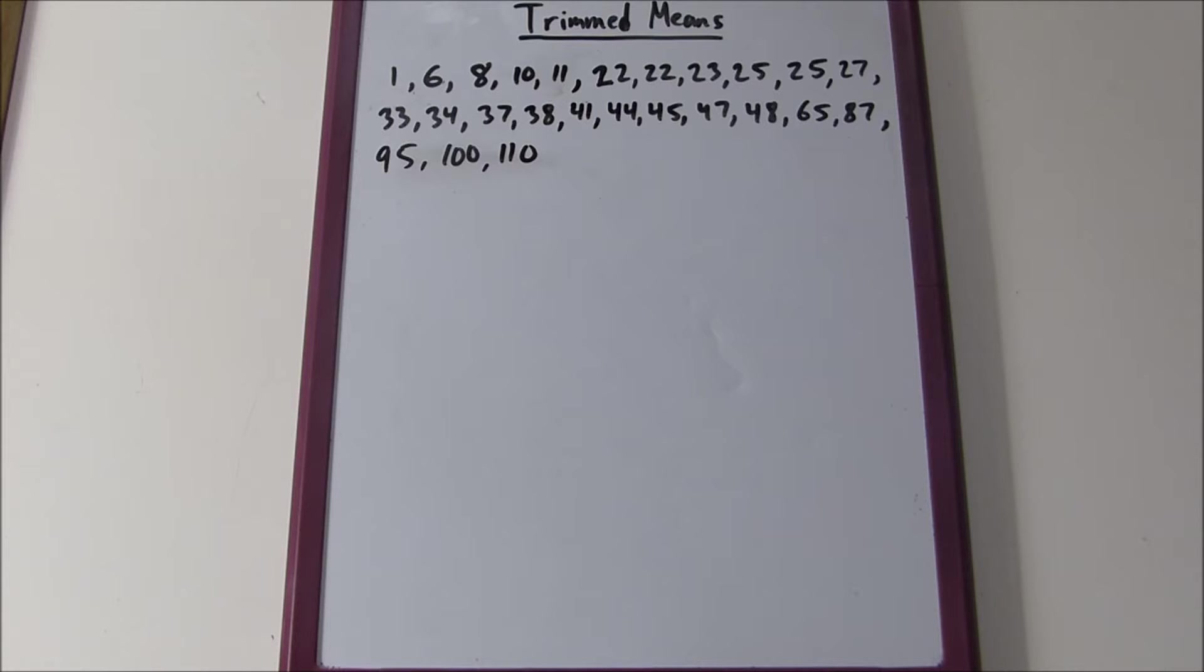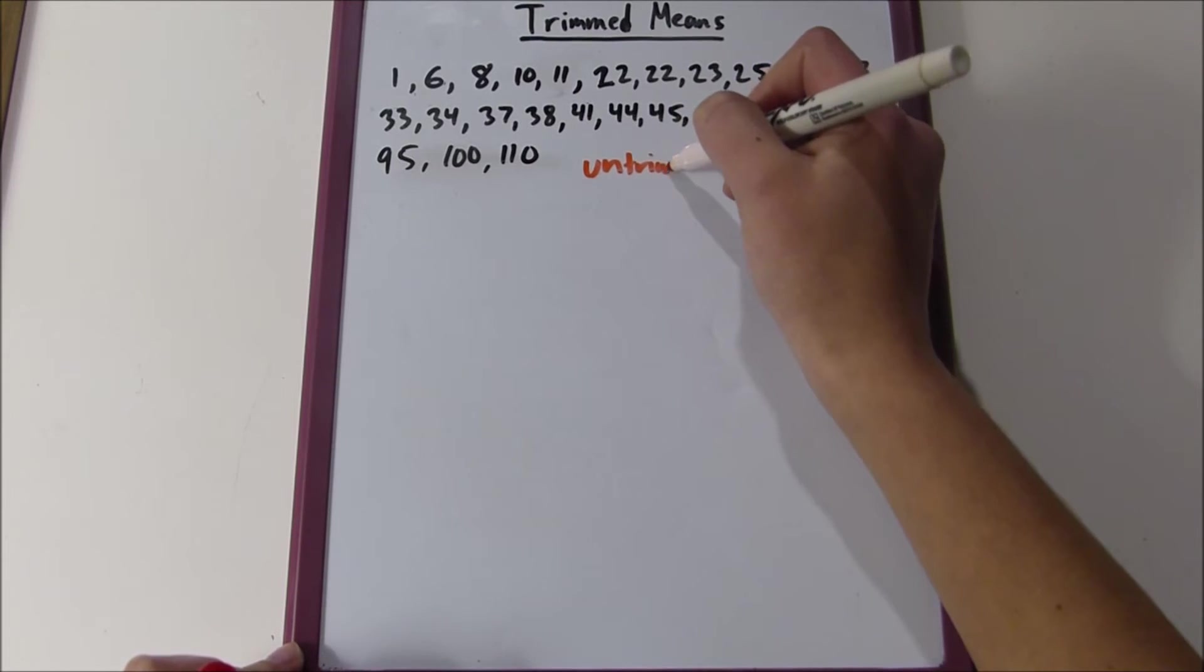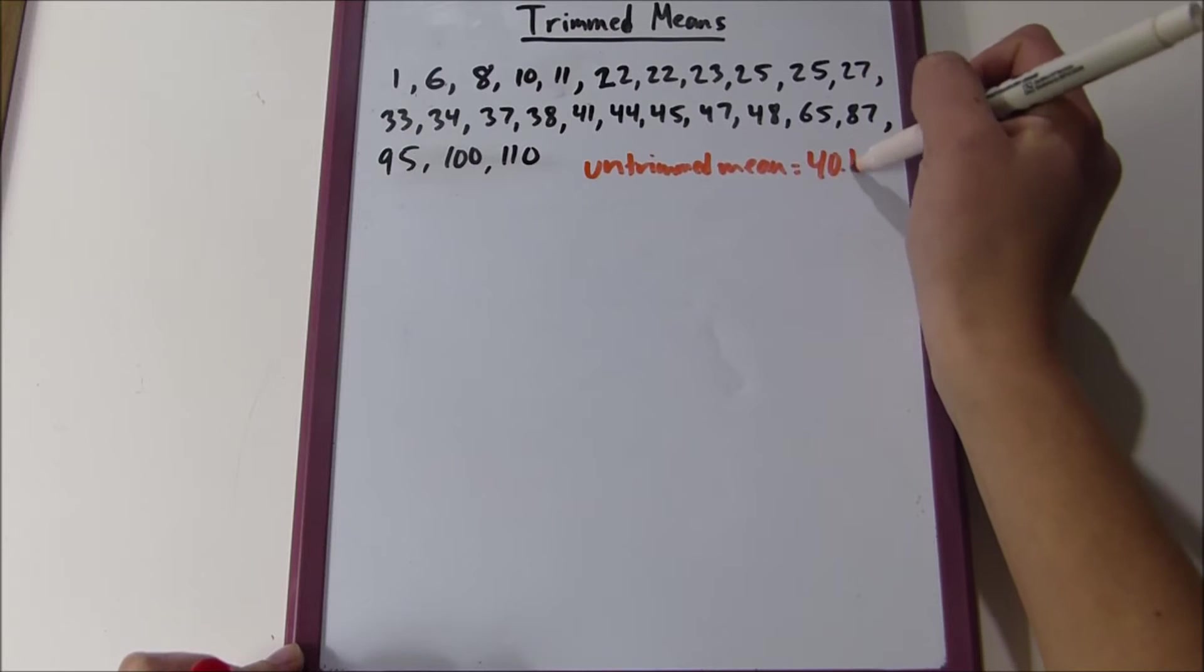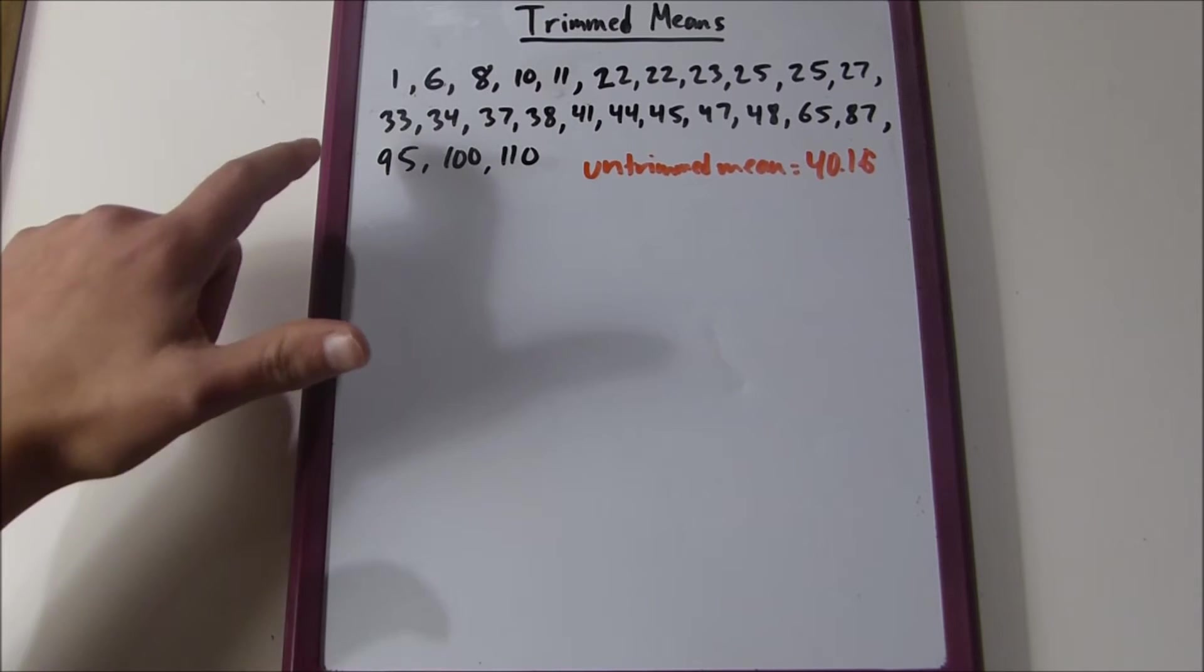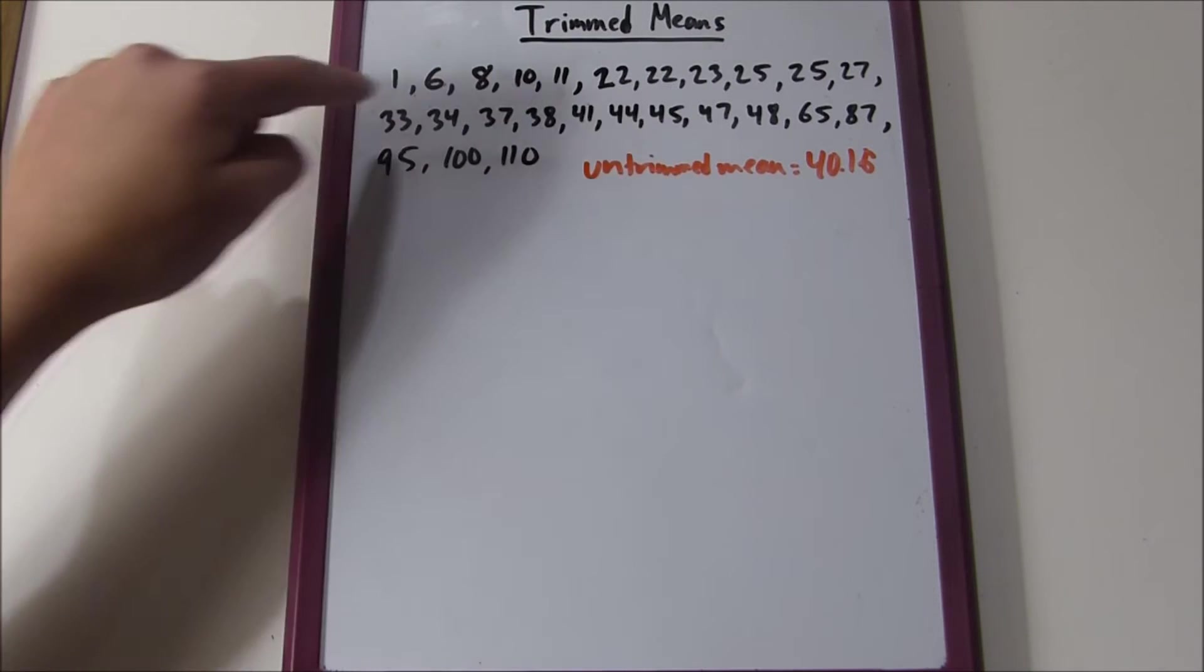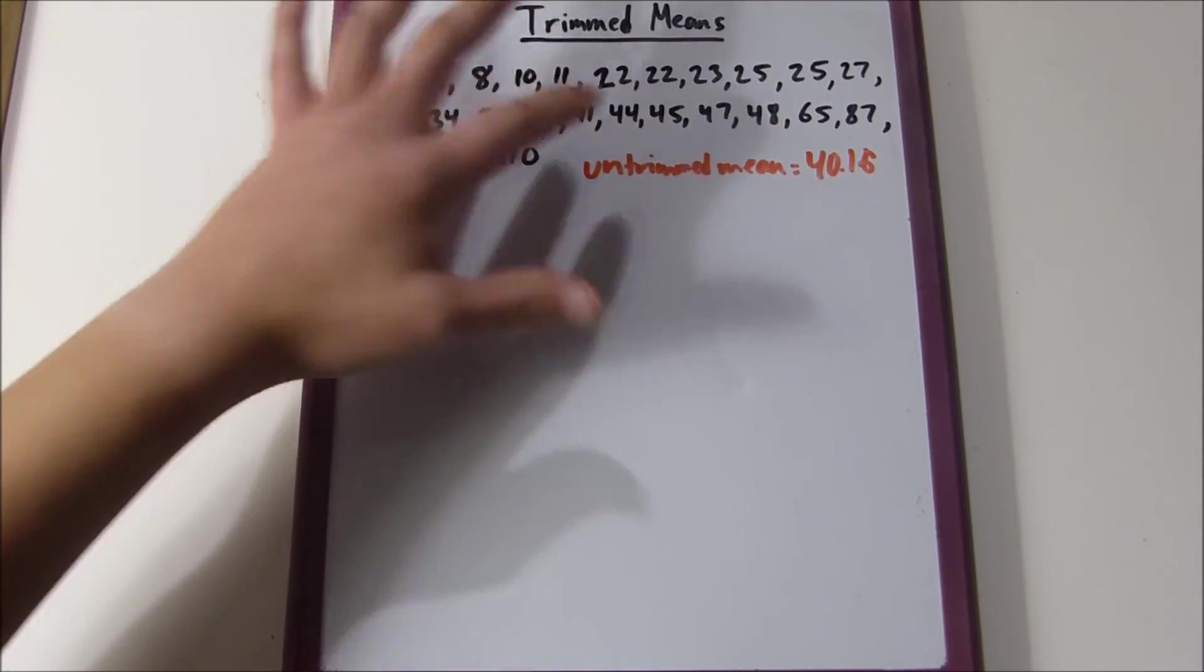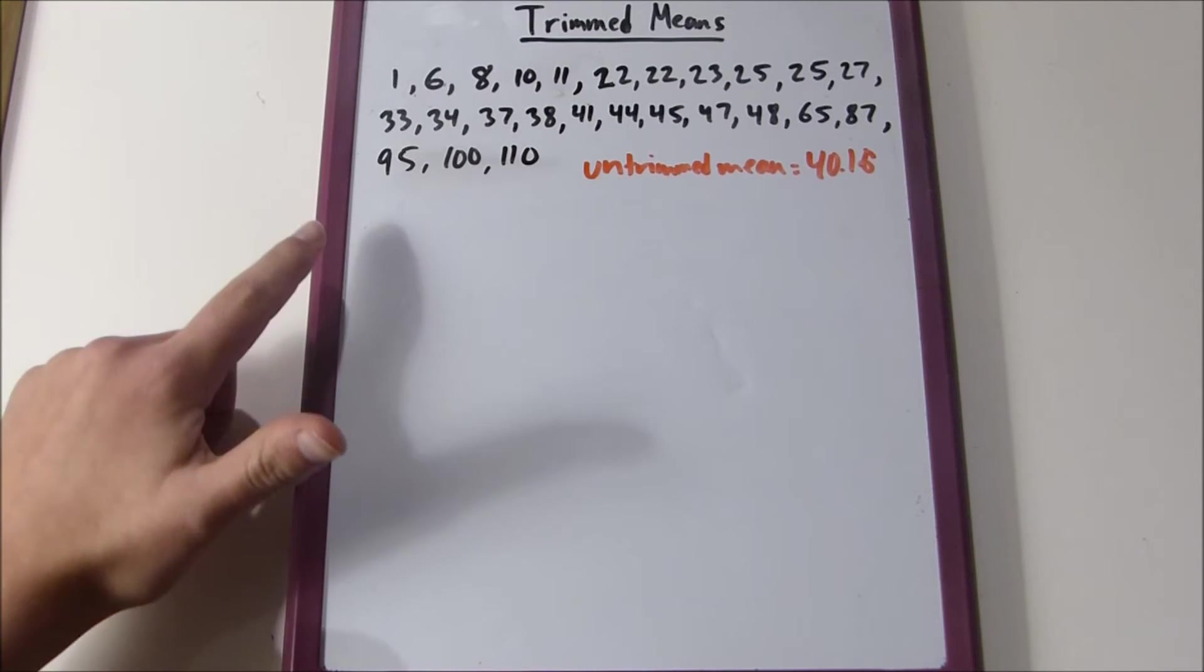I found the mean and it was 40.016. The untrimmed mean is 40.016. That's pretty good, but as you'll notice, most of the data is concentrated around the 30s. You have a lot of 20s, a lot of 30s, some 40s, but you have a lot of outliers both on the lower end and the upper end.